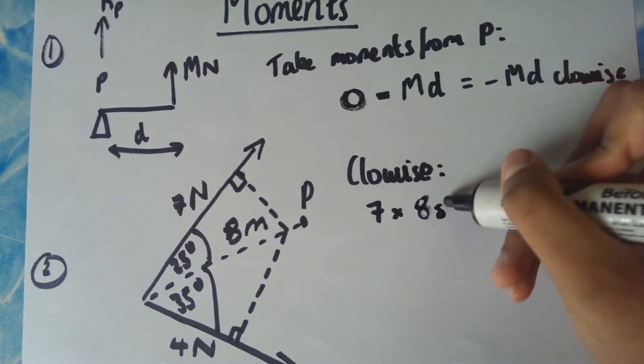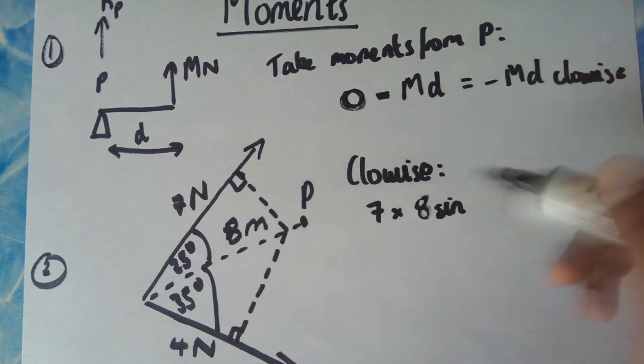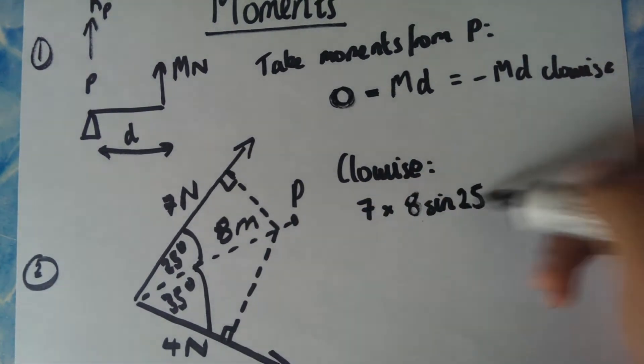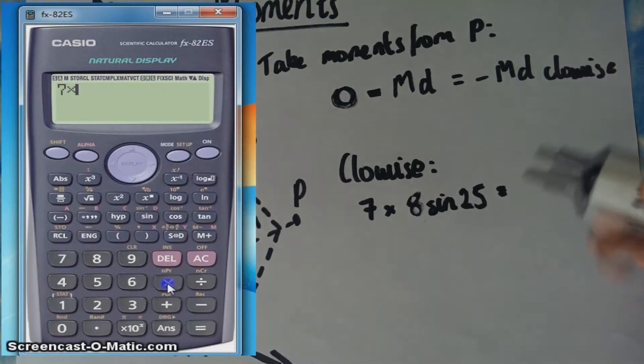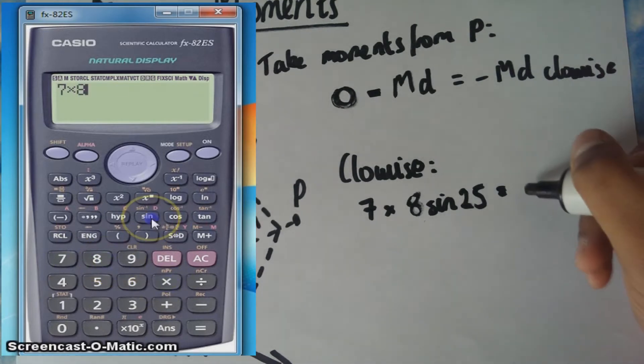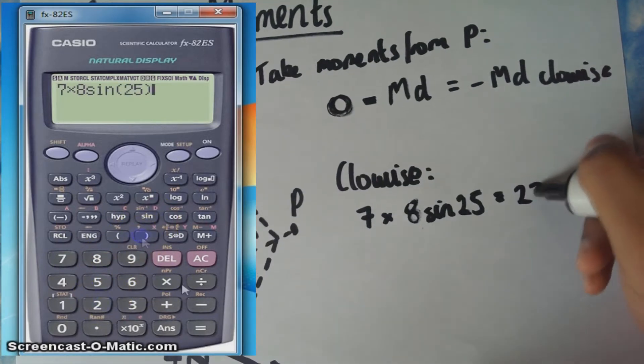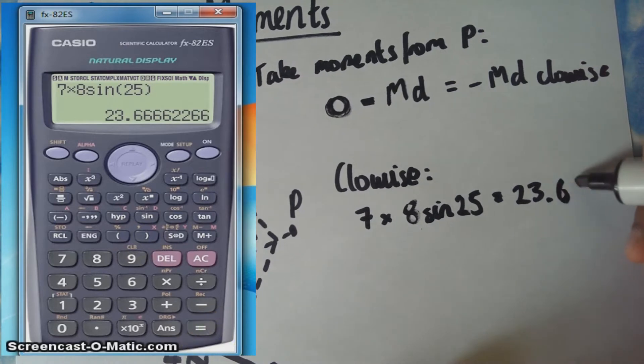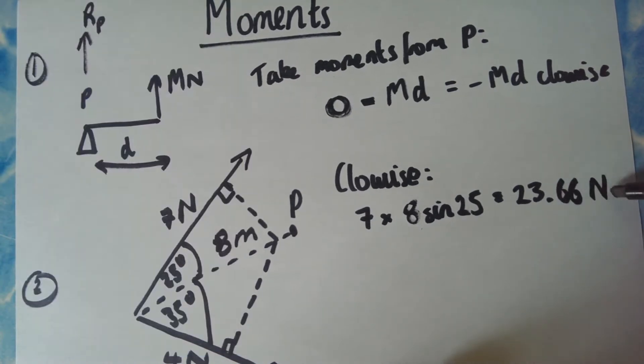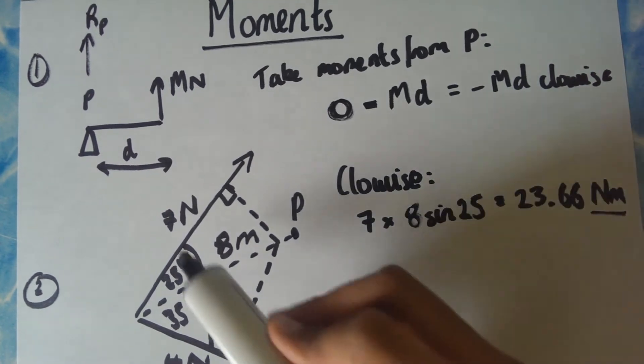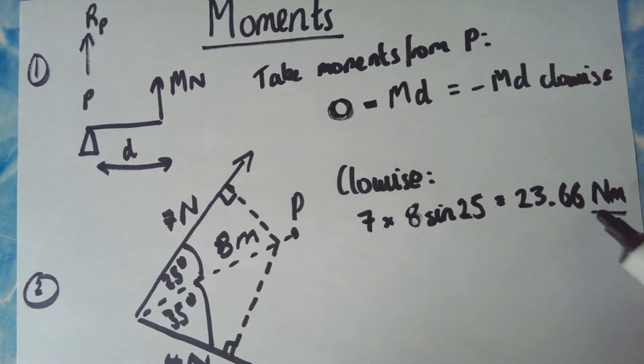It's perpendicular. So using trigonometry you can say that's 8 sine 25. So if you put that in your calculator, which should be on screen, you will get 23.66 Newton meters. Bear in mind Newton meters is important because obviously you're timing the force by distance. Newton times meters equals Newton meter, that is the unit of moments.